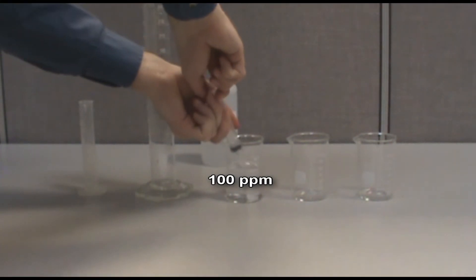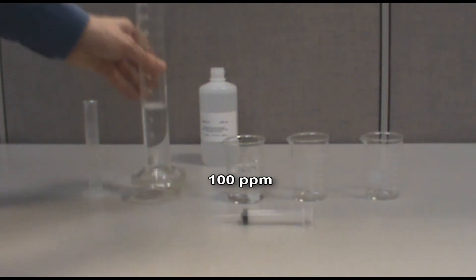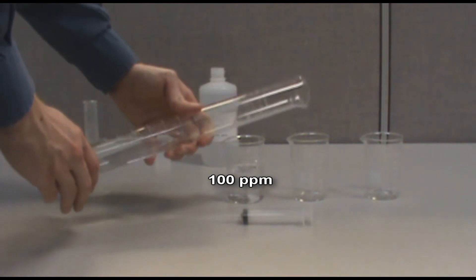Now measure out 10 milliliters of your 100 part per million standard using your pipette and graduated cylinder. Then measure out another 90 milliliters of DI water and combine both solutions in your second beaker.